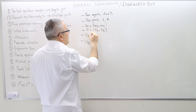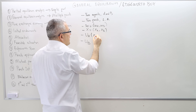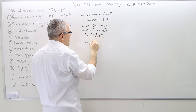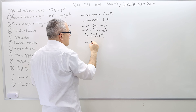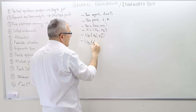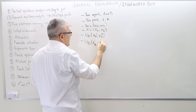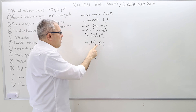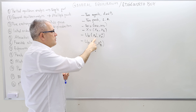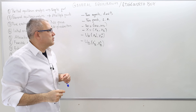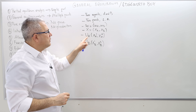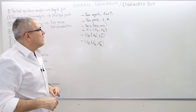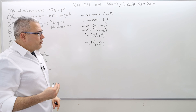We have utility functions: a utility function for agent A and a utility function for agent B. These utility functions represent their preferences. We assume each agent gets utility only from his or her own consumption of good one and good two. So u_A is a function of x_{A1} and x_{A2}.